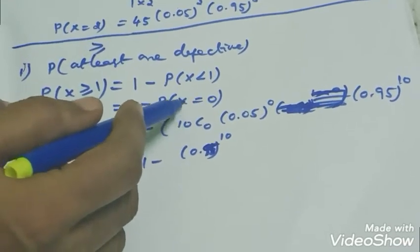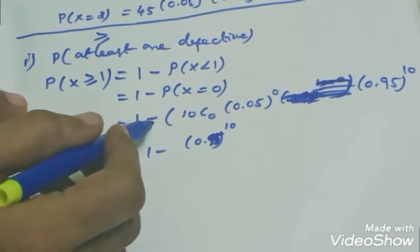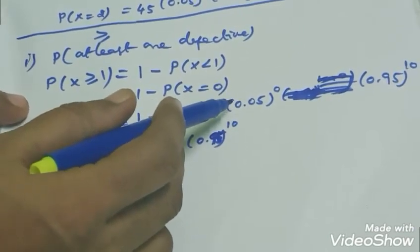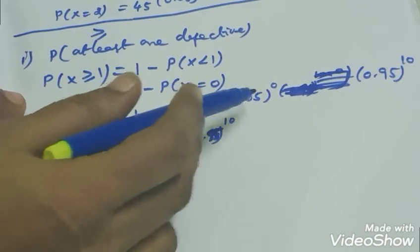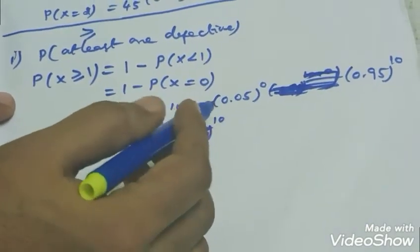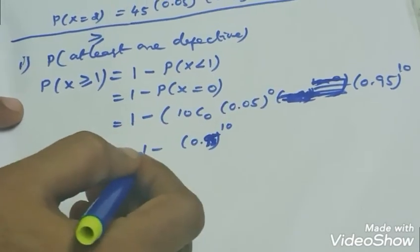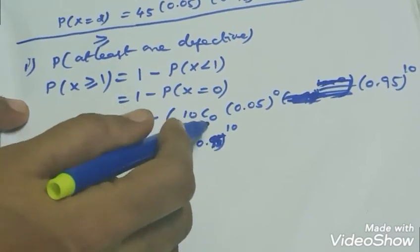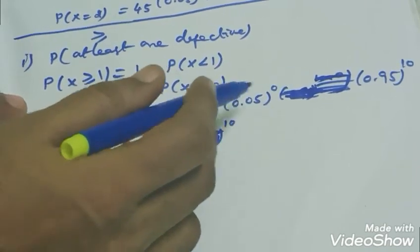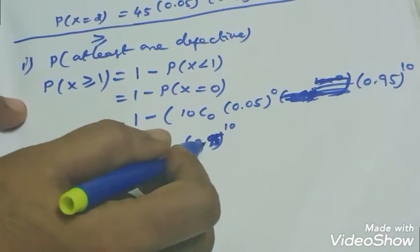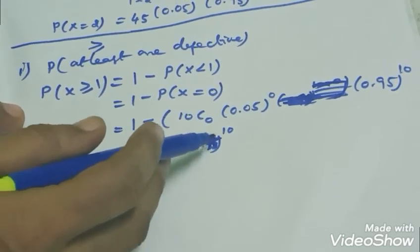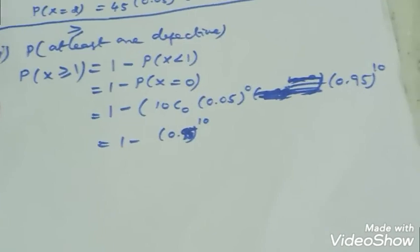So P(X=0): 10C0 * (0.05)^0 * (0.95)^10. 10C0 is 1, and (0.05)^0 is 1, so this simplifies to 1 * 1 * (0.95)^10 = (0.95)^10. Therefore, P(X ≥ 1) = 1 minus (0.95)^10.